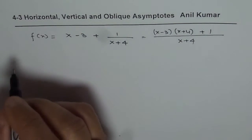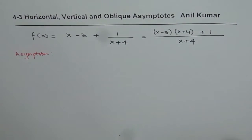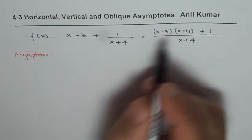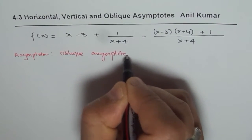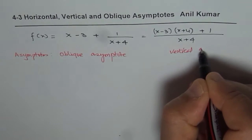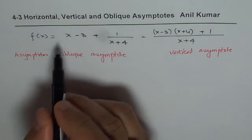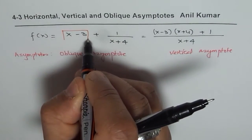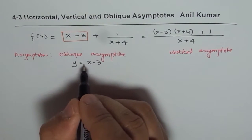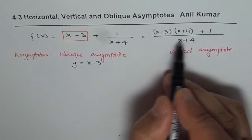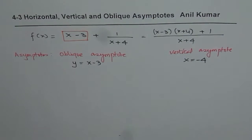As far as the asymptotes are concerned, we expect two types of asymptotes in this situation. The first is the oblique asymptote, and the other is the vertical asymptote. When we write the function as x minus 3 plus 1 over x plus 4, the equation of the oblique asymptote is y equals x minus 3. And the equation of the vertical asymptote is the denominator being 0, which gives x equals minus 4. So these are the two asymptotes for the given rational function.